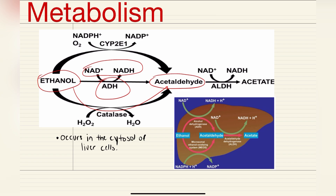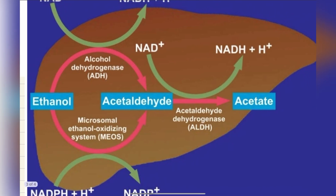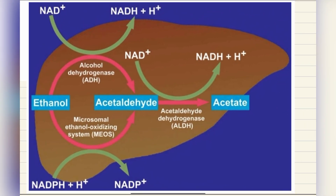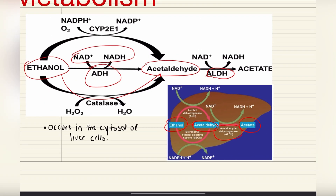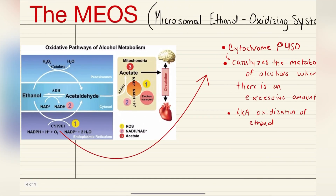Now what we have next is something called ALDH — acetaldehyde dehydrogenase. If we blow up the image here, we have a liver where we have our ethanol consumption, then alcohol dehydrogenase converting that ethanol into acetaldehyde — the toxic stuff — and then acetaldehyde dehydrogenase, an additional enzyme that comes in and converts this into acetate. That acetate will then be used in other processes within the body. Remember, this all occurs in the cytosol of liver cells — the cytosol is the fluid area or cytoplasm of a cell.